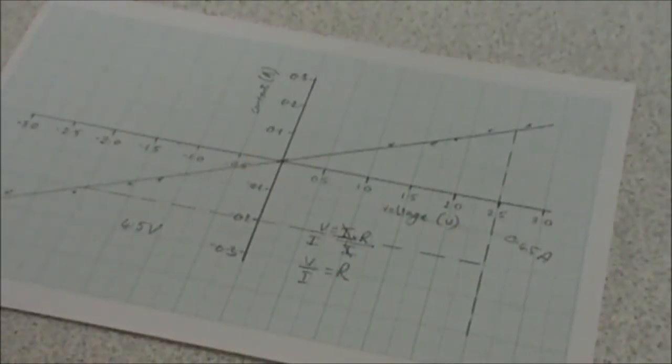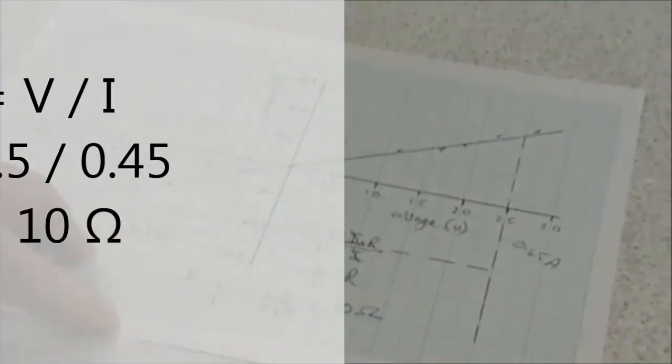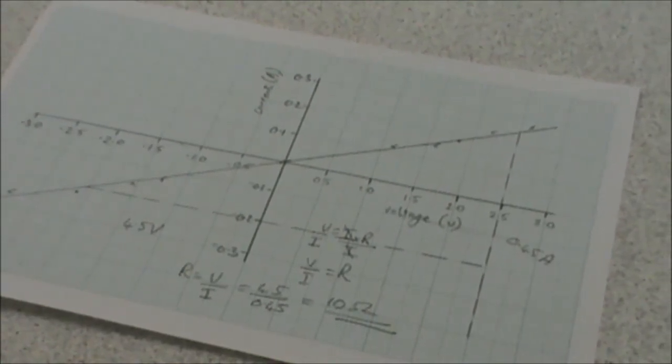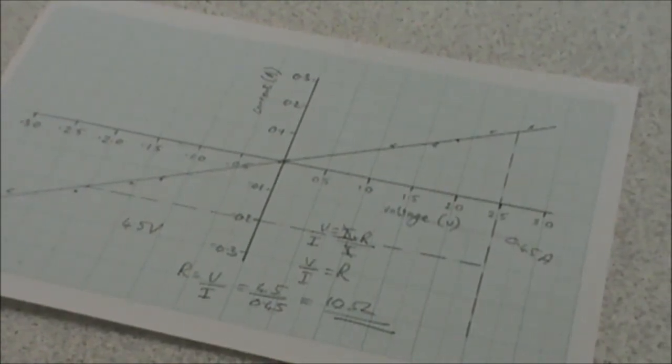We can now calculate the resistance of our graph. So our resistor was a 10 ohm resistor. I happen to know that that was correct because I chose a 10 ohm resistor. So there we have it. We've been able to calculate the value of our fixed resistor by measuring the voltage and the current. That concludes Required Practical 4.